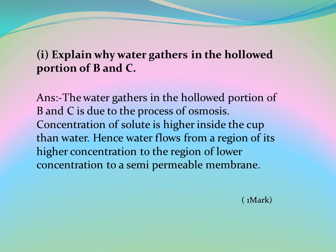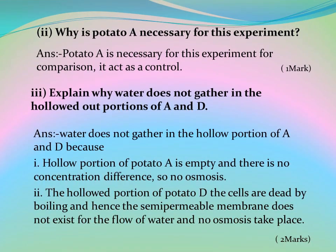Question 1: Explain why water gathers in the hollowed portion of B and C. Water gathers in the hollowed portions of B and C due to osmosis. The concentration of solute is higher inside the cup than in the water outside; hence water flows from a region of higher concentration to lower concentration through the semi-permeable membrane. Question 2: Why is potato A necessary for this experiment? Potato A is necessary for comparison — it acts as a control.